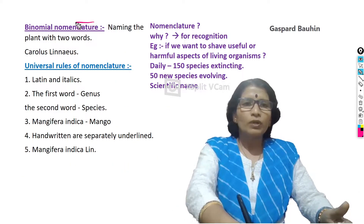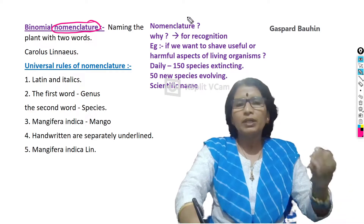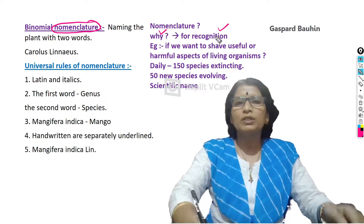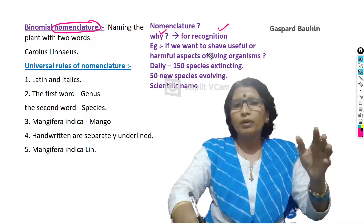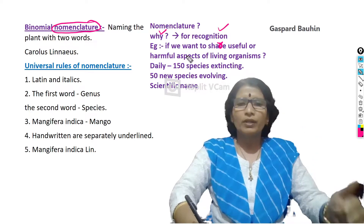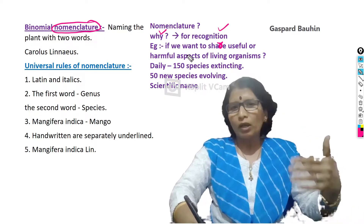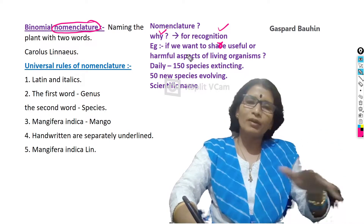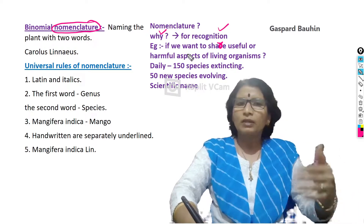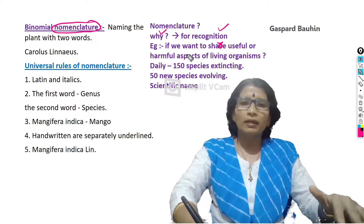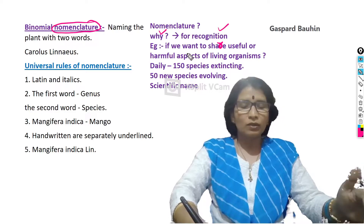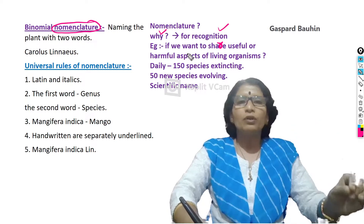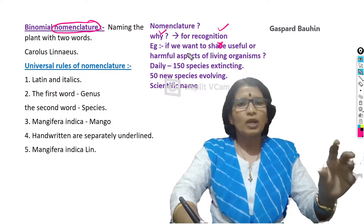In binomial nomenclature, what is nomenclature? Nomenclature means giving a particular name to any living organism. Why do we have to give a particular name? For recognition. What is the use of recognition? For example, on the earth, a large number of plants and animals are there. These plants have useful and harmful effects. So we want to know and share those useful and harmful effects with others. How can we refer to a plant or animal? We cannot just say 'that plant' or 'this animal' — no one can understand which plant that is. At that time, we must say the particular name of the living organism. That is why each and every living organism must have a particular name.